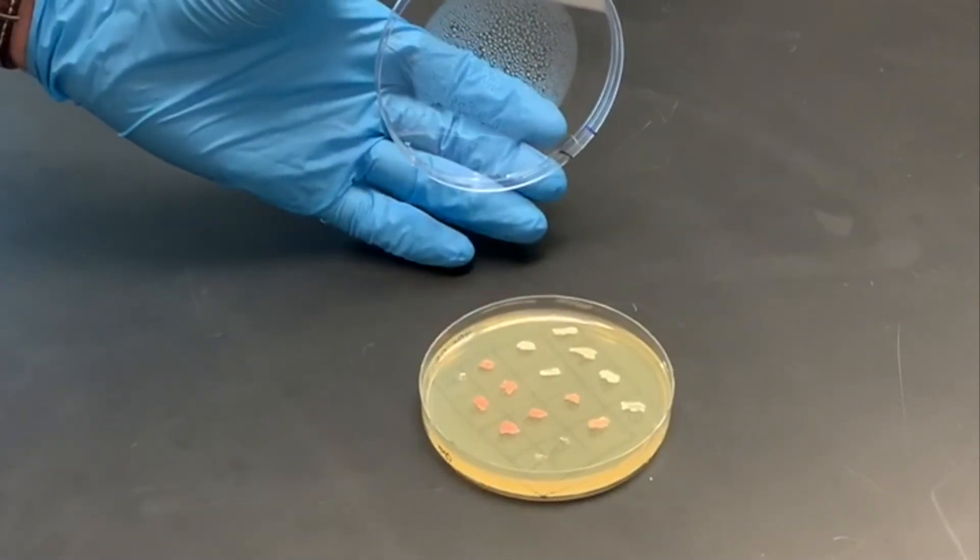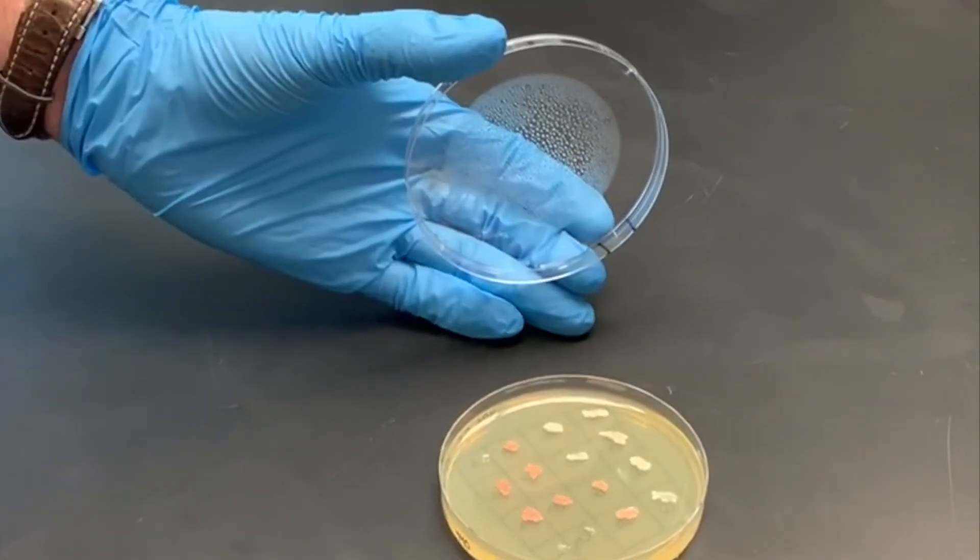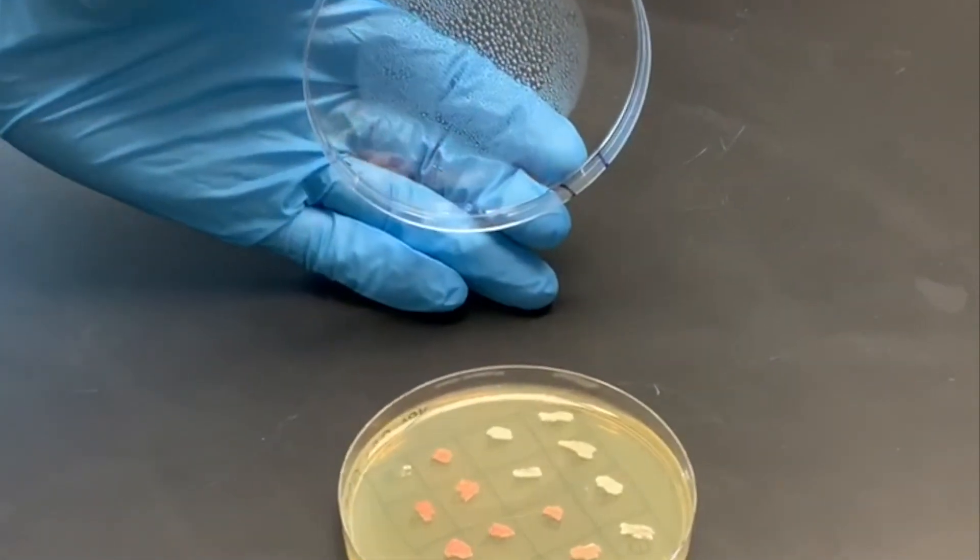In our lab, we were able to assemble a plasmid capable of knocking out the AD2 gene in yeast through CRISPR editing, producing a red phenotype.